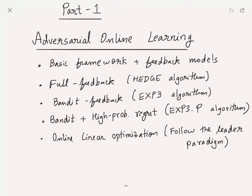However, it's not exhaustive, so this is mostly like a starting point and you can use this to then go and read textbooks — many textbooks have been written by other people to dive deeper. In part one I will talk about adversarial online learning, its basic framework, and two feedback models: the full feedback and the bandit feedback.